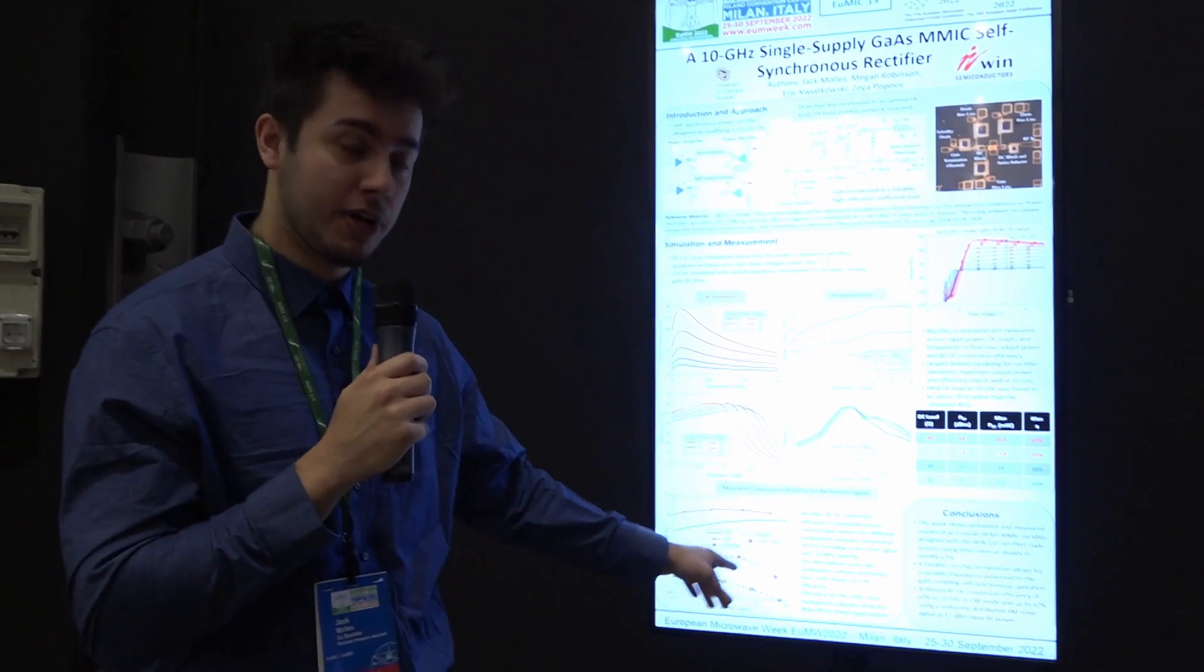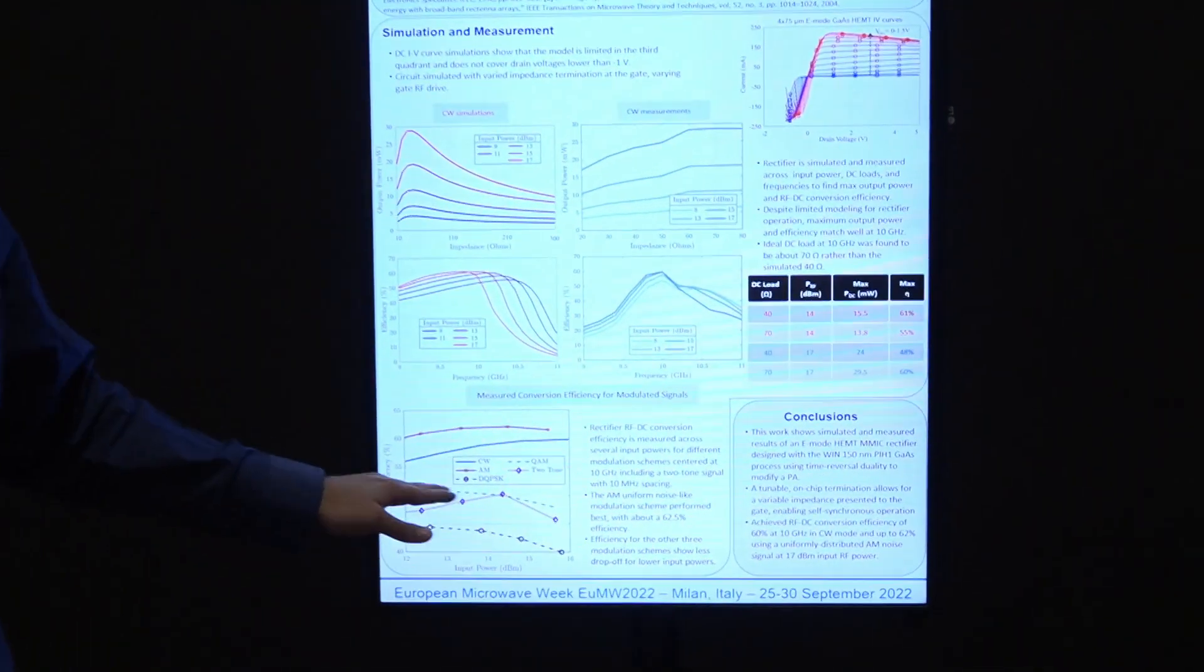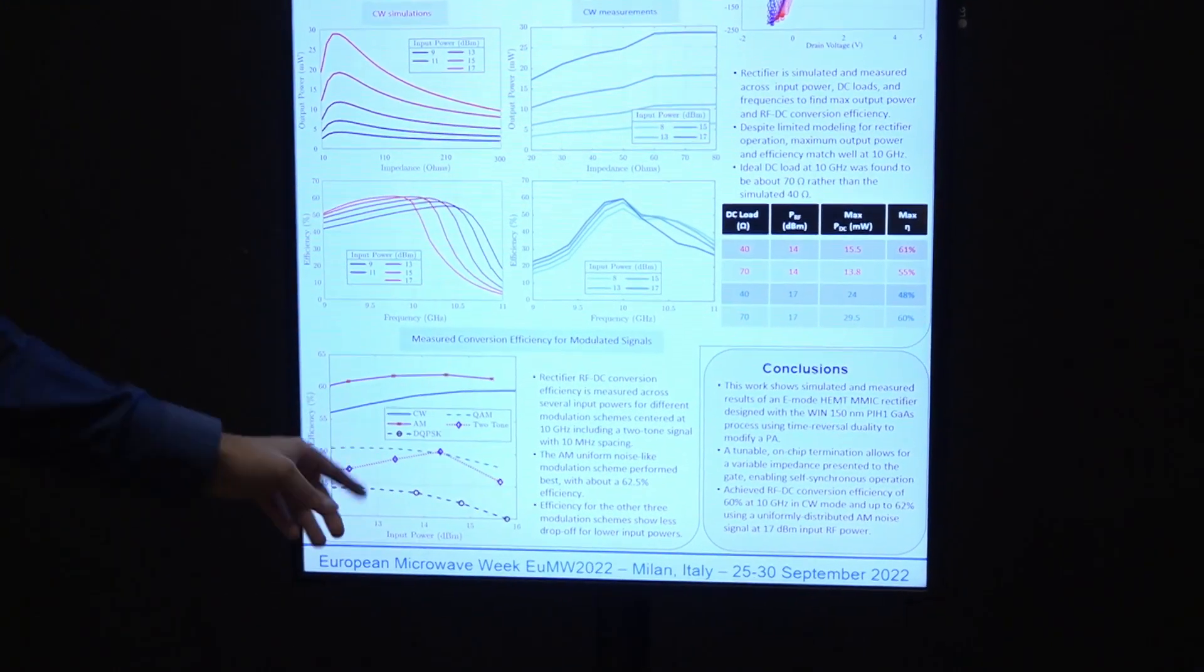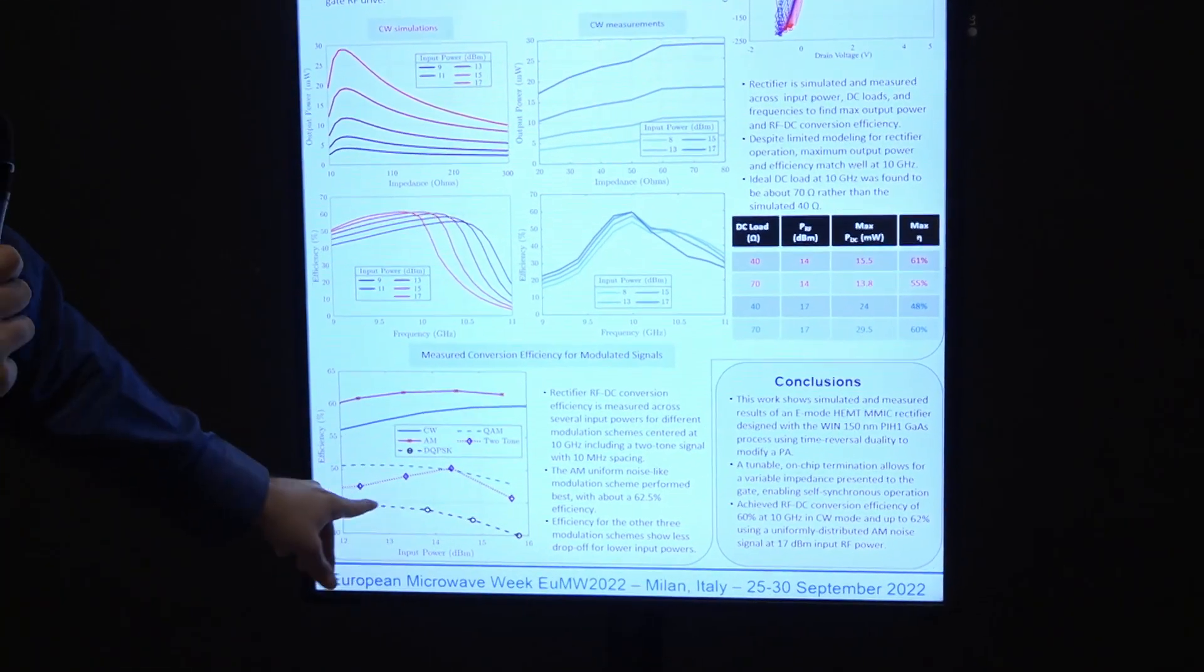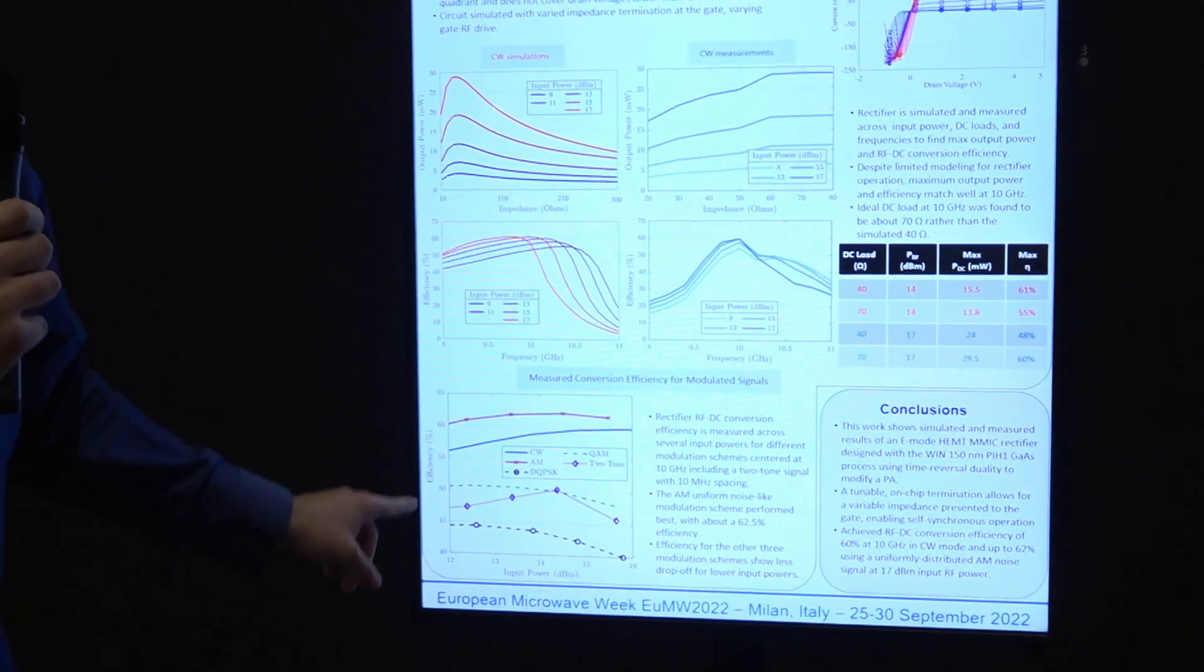Other modulated signals we tried—QAM, two-tone, DQPSK—performed a bit worse at higher powers but actually perform better at lower input powers, as you can see by these shallower slopes. The CW starts to fall off a lot faster.